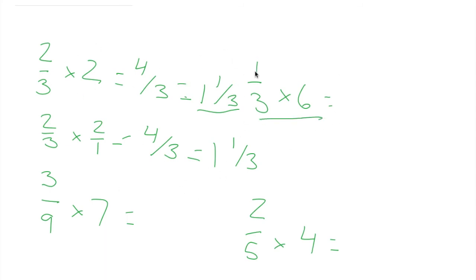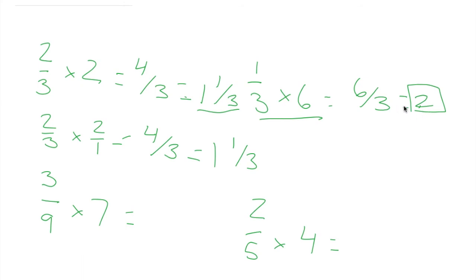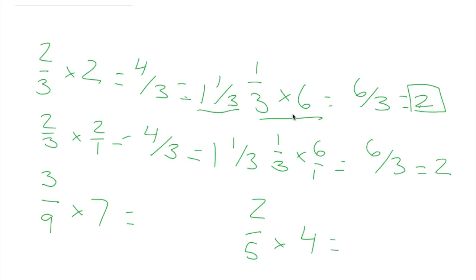Next problem: one-third times six. Six times one equals six, and the denominator is the same — so six-thirds — we have to simplify. Three can go into six, so our answer is two. Because six divided by three equals two, and fractions are basically division. Using the clearer way: one-third times six over one. Six times one equals six, three times one equals three, six-thirds simplifies to two. Our answer is two.